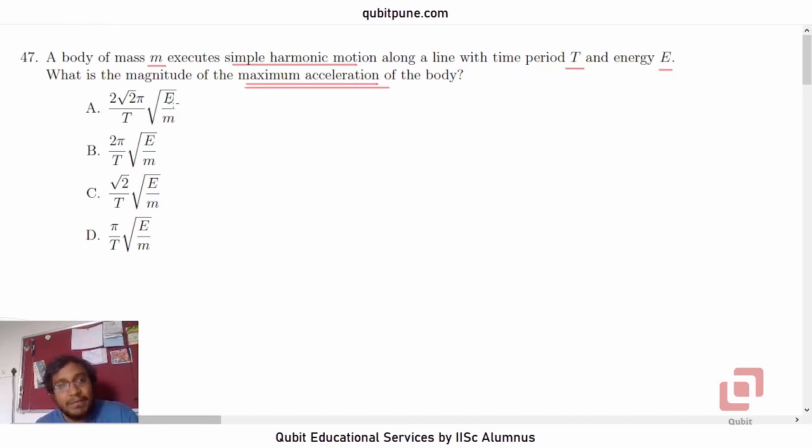In all four options, we have square root of E by m into one upon T, the same, to match the dimensions. And what we need to find correctly is the coefficient of that term.